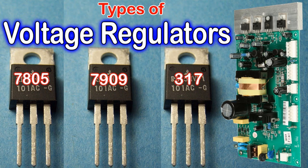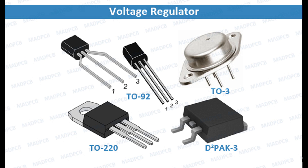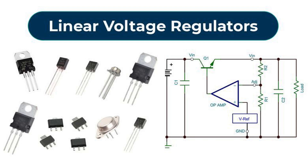By incorporating these protection features, voltage regulator ICs provide robust protection against a wide range of potential hazards, ensuring the safety and reliability of the electronic systems they power. Overall, a voltage regulator IC ensures that the output voltage remains stable and within specified limits, regardless of variations in input voltage or changes in load conditions, making them essential components in a wide range of electronic devices, from simple battery-powered gadgets to complex power supply systems.